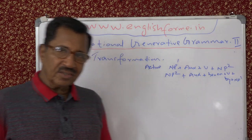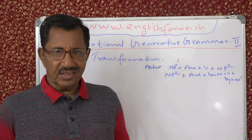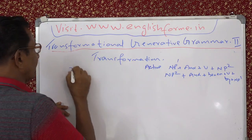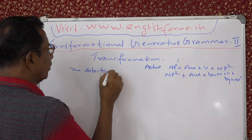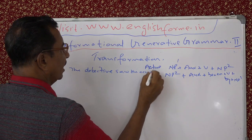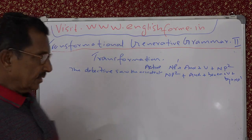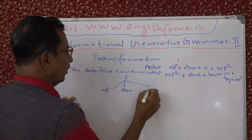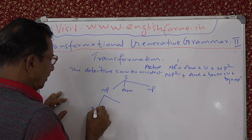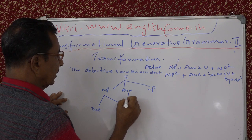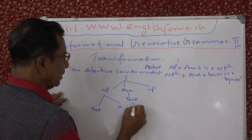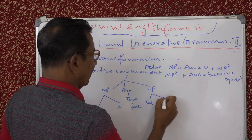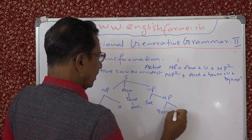Now what happens in transformation: you insert some rules like the BEN insertion rule, or the BY insertion rule. Look at the trees and you will see. First of all, take the active sentence: 'The detective saw the accident.' This is the active sentence, and you can make it explicit. You have got NP, auxiliary, VP, NP — the terminal noun. VP has tense — tense here is past — 'saw' is past. Then the verb and you have got NP, which is the terminal noun.